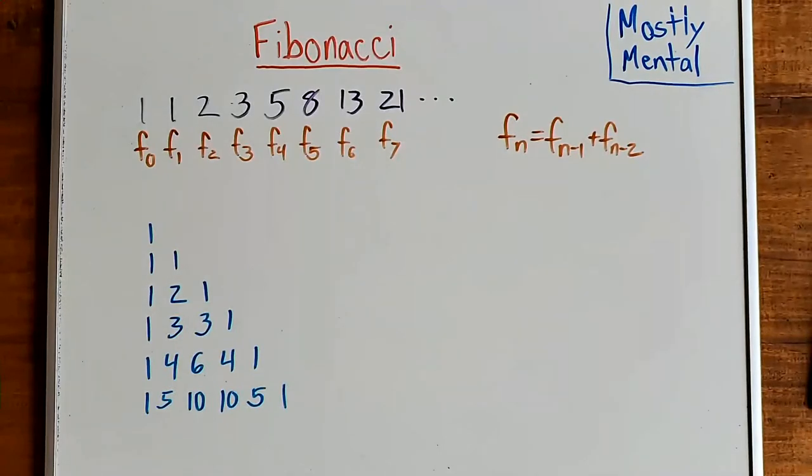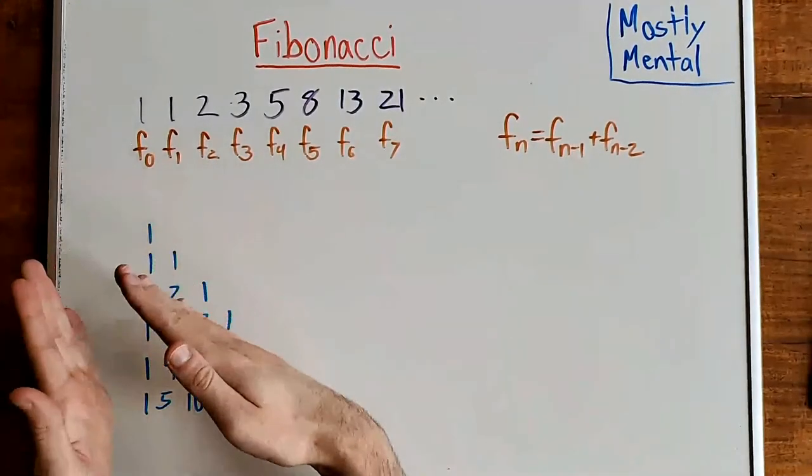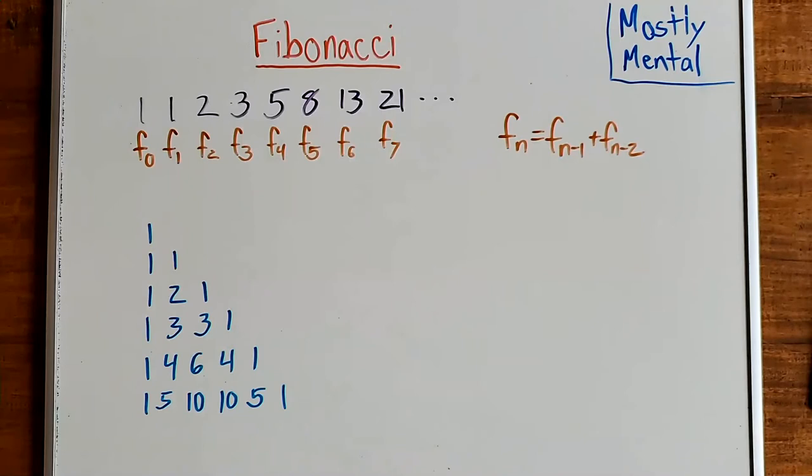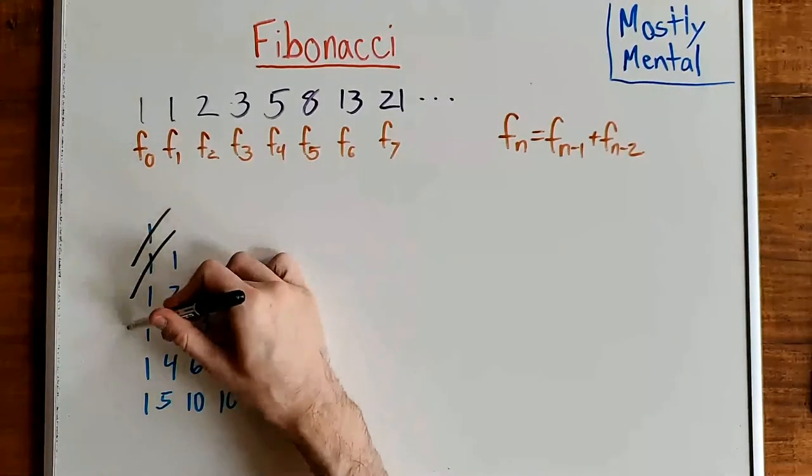Now let's take another look at the problem from the end of the last video. Recall Pascal's triangle, which I've drawn here, shifted to the left, but is the same thing as last time, is made up of the values of n choose k, that is, the number of ways to choose k of n things. And if we take the sums along the diagonals, like so,